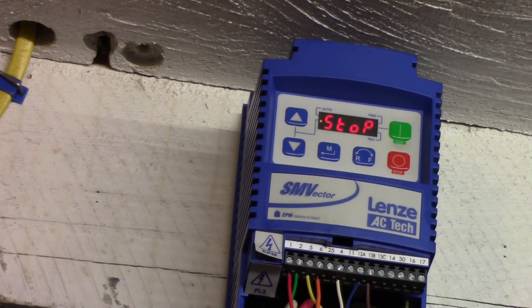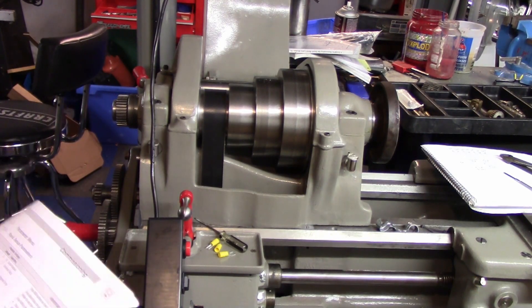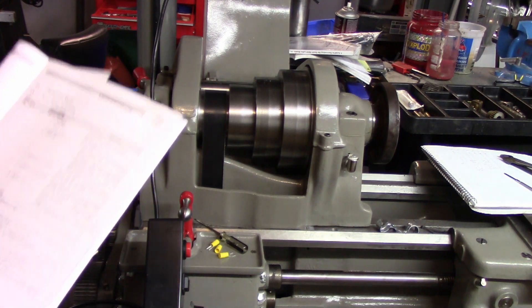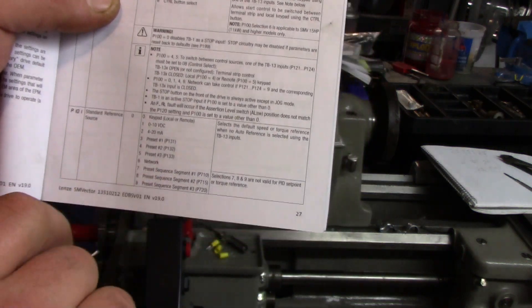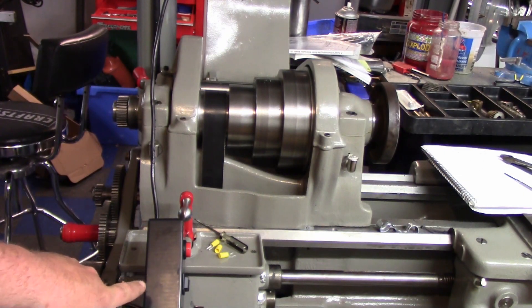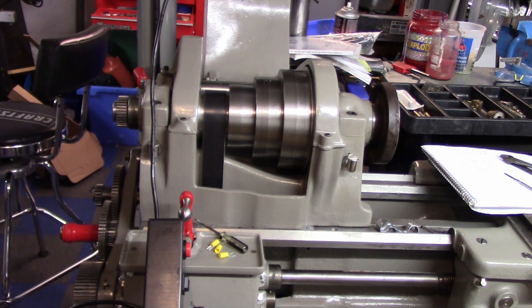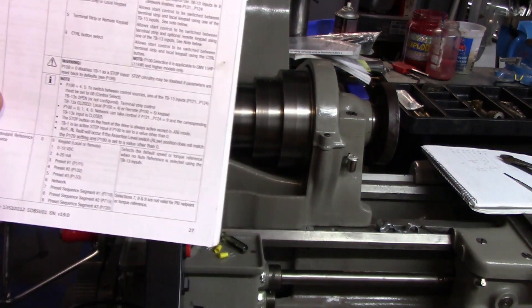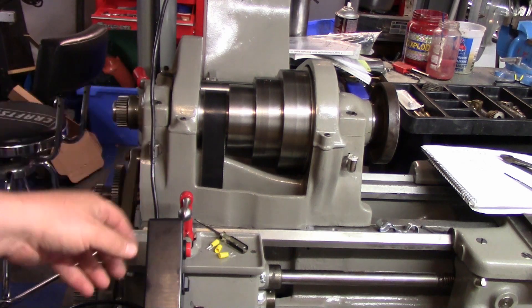I realized that there was one more parameter that I needed to reprogram, and that is parameter 101. We need to change it from zero to one. That will allow it to read the potentiometer on the remote panel here. I remember reading through this, remembering I needed to do something else but I couldn't remember what it was, but that's it.